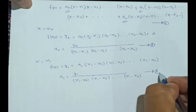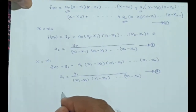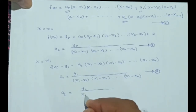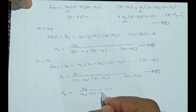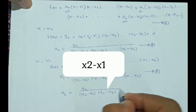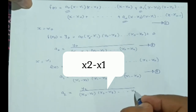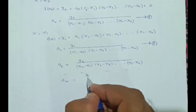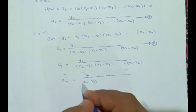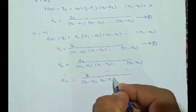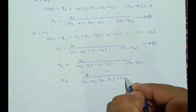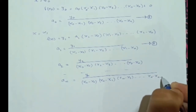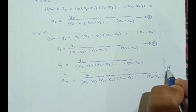Following the same method, we can predict what a2 will be. So a2 = y2 / [(x2−x0)·(x2−x1)·...·(x2−xn)]. And an = yn / [(xn−x0)·(xn−x1)·(xn−x2)·...·(xn−xn−1)]. Let's put these equations as equation 4.